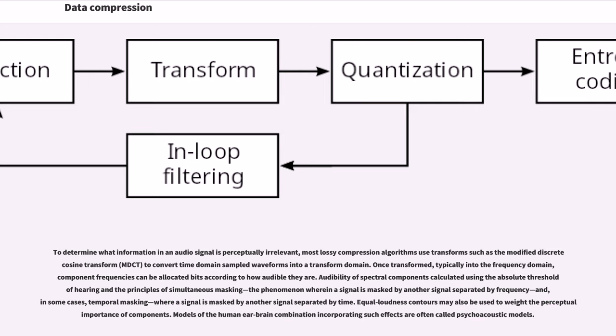To determine what information in an audio signal is perceptually irrelevant, most lossy compression algorithms use transforms such as the modified discrete cosine transform (MDCT) to convert time domain sample waveforms into a transform domain. Once transformed, typically into the frequency domain, component frequencies can be allocated bits according to how audible they are. Audibility of spectral components is calculated using the absolute threshold of hearing and the principles of simultaneous masking, the phenomenon wherein a signal is masked by another signal separated by frequency, and in some cases, temporal masking, where a signal is masked by another signal separated by time. Equal loudness contours may also be used to weight the perceptual importance of components. Models of the human ear-brain combination incorporating such effects are often called psychoacoustic models.